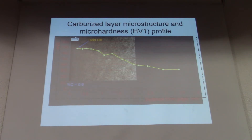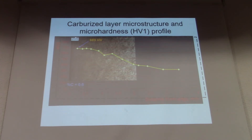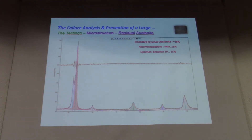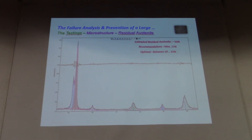Let us begin with the micro hardness profile HV1. You can see that this micro hardness profile shows a very large hardening penetration with some strange variation of hardness at a certain distance from the surface of the tooth. This is a section of the tooth after etching. The X-ray diffraction analysis assessed the content of retained austenite at 16%, slightly above the recommended maximum of 15%.